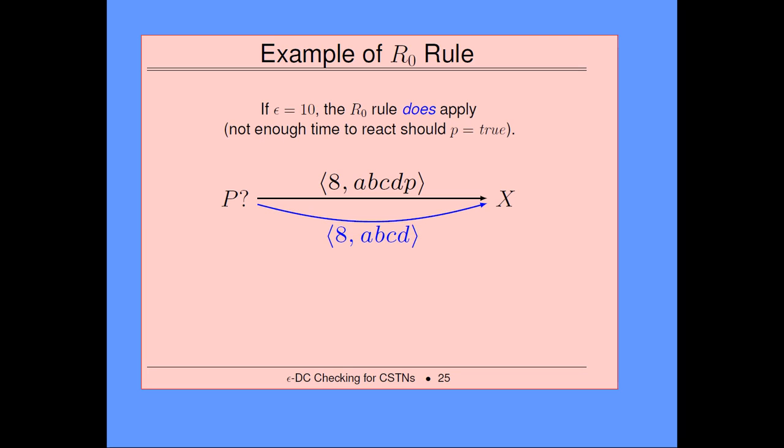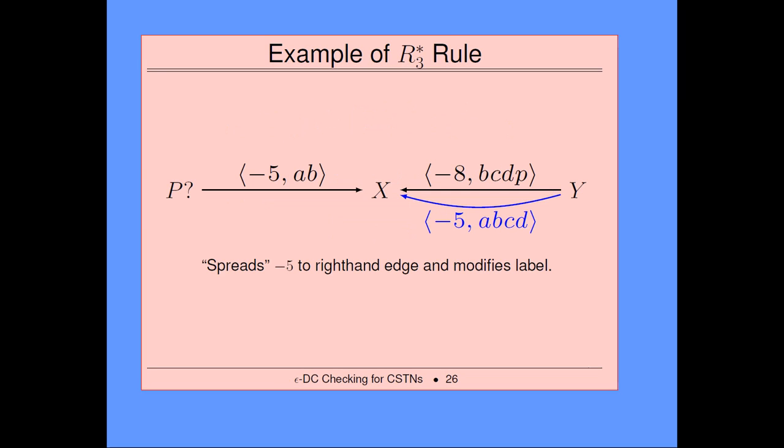The idea is: if you learn the value of P and it turns out to be false, X equals 20 is actually okay — you have time to react. So we wouldn't want to extend that by generating the more general label. But if epsilon is equal to 10, you would make that. There are these small changes that need to be made to the propagation rules. Here's another one, the R3-star rule. It spreads the value of one edge over to another. There's a theorem called the spreading lemma, which is very useful in proving completeness because it spreads the lower bounds across all unexecuted time points in certain cases.